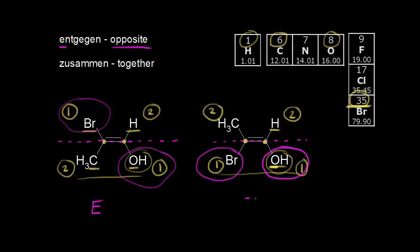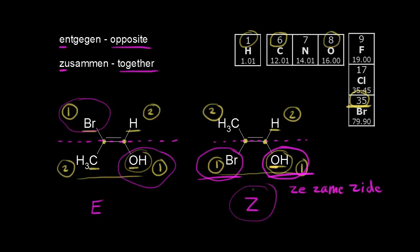This is the Z configuration. Z comes from the German word meaning together, so the two higher priority groups are together — they're on the same side. A good way to remember this is to think about the two higher priority groups being on Z-same Z-side. That's one way to remember that the two higher priority groups being on the same side is Z.